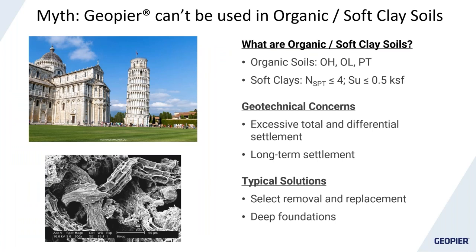Next: GeoPeer can't be used in organic or soft clays. Organic soils include organic clays, low and high plasticity clays, and peats. Soft clays are typically SPT N-values less than 4 or undrained shear strengths less than 0.5 ksf. Concerns include excessive total and differential settlements, plus long-term settlement over time — best evidenced by the famous Leaning Tower of Pisa, built on a swamp (Pisa is actually the Latin word for swamp). Typical solutions are removing and replacing shallow organics, or using deep foundations to bypass poor soils.